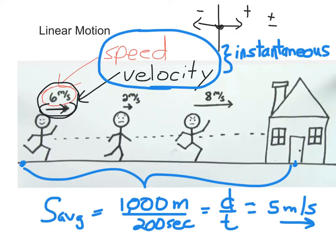This is different than the instantaneous speed. At any given moment, I could have been going slower or faster, but on average, the total trip was an average of 5 meters per second.